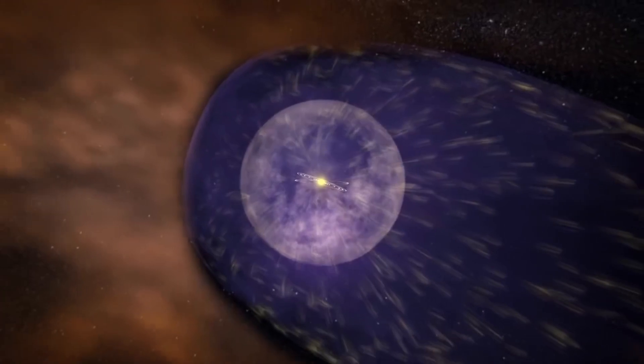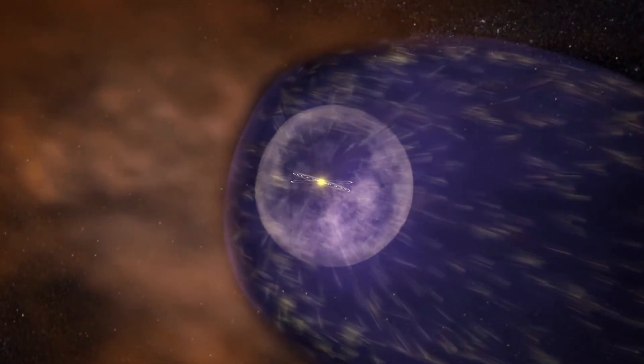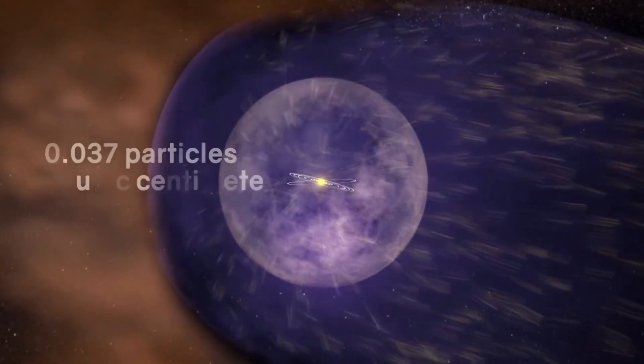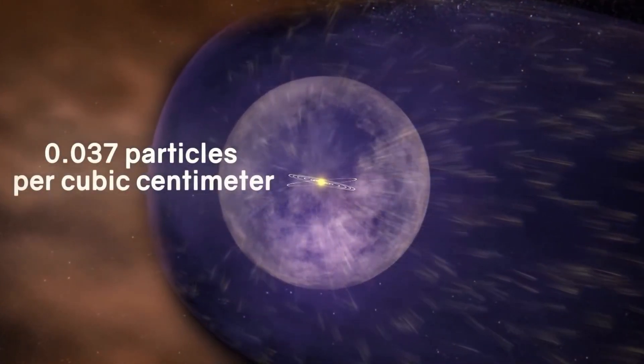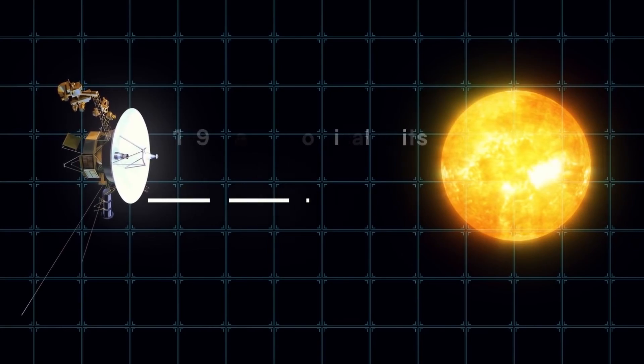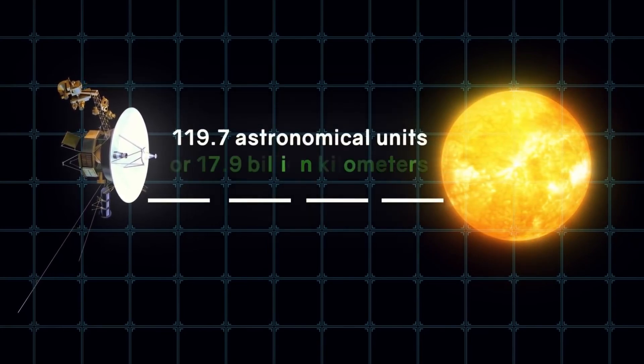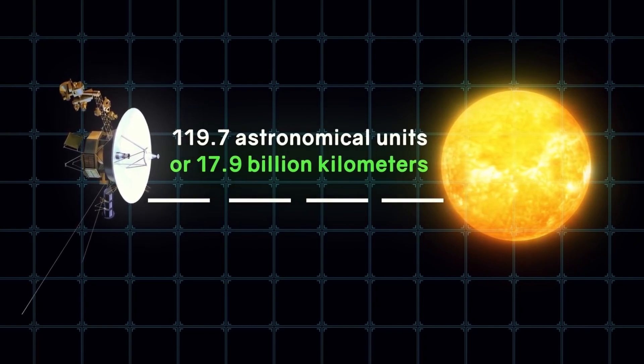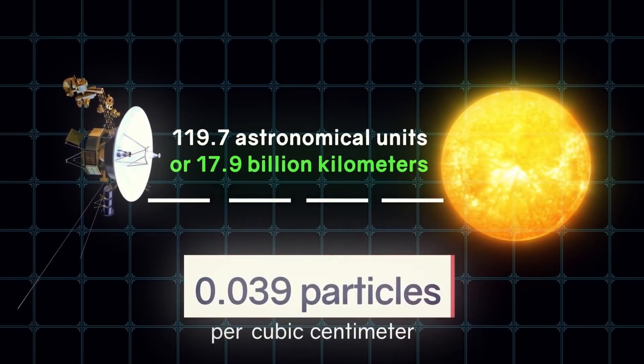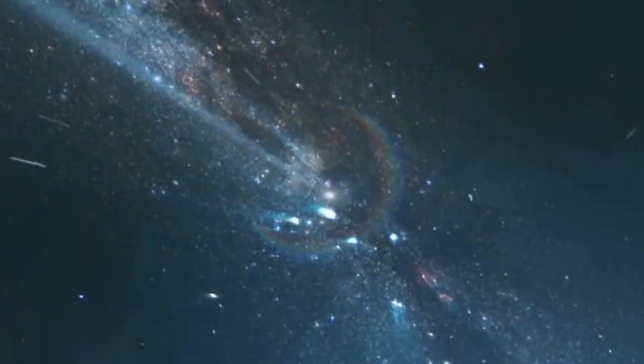According to calculations, the density of particles behind the heliopause, that is, in interstellar space, should be 0.037 particles per cubic centimeter. The Voyager 2 instruments showed that the density outside the solar system, at a distance of 119.7 astronomical units, or 17.9 billion kilometers from the sun, was 0.039 particles per cubic centimeter. This almost coincided with the calculations.